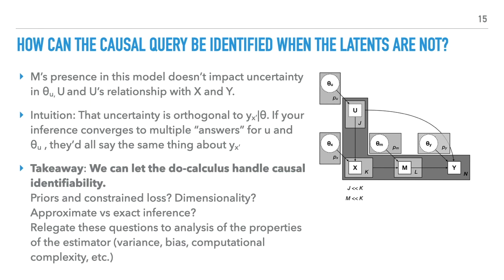So our takeaway is that we can let the do-calculus handle causal identifiability. Discussions about priors, hyper-priors, constrained loss, dimensionality, approximate versus exact inference - we can have these discussions in the context of understanding the properties of our estimator. For example, understanding its variance, its bias, computational complexity, scalability, efficiency, etc.